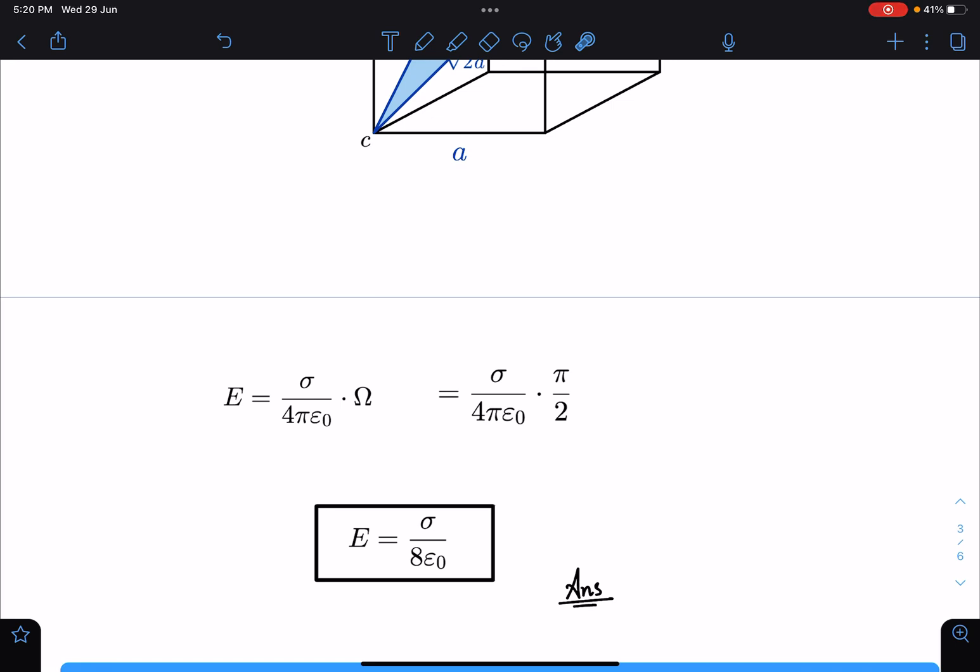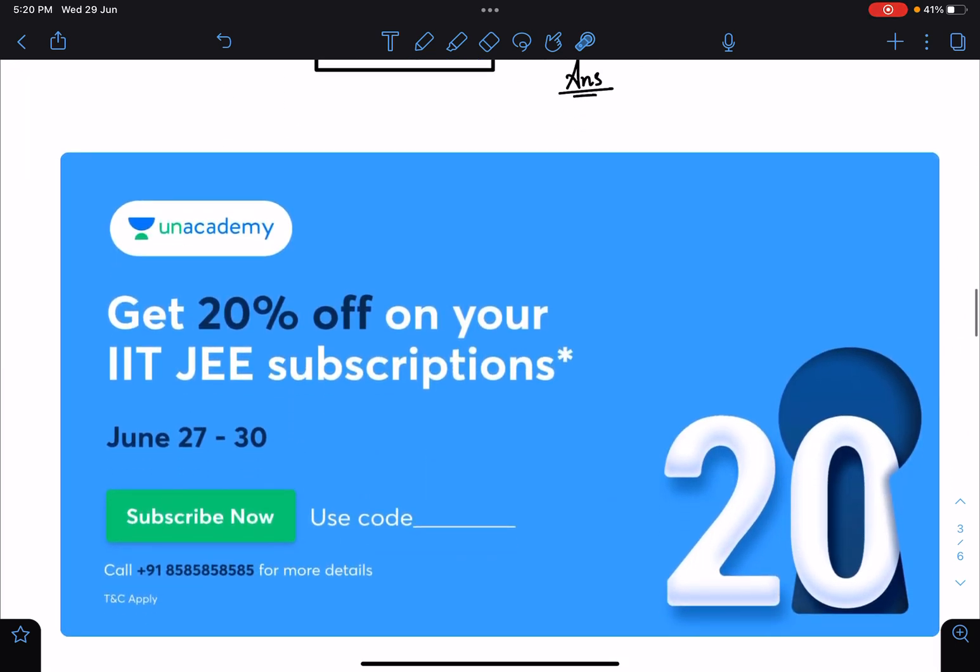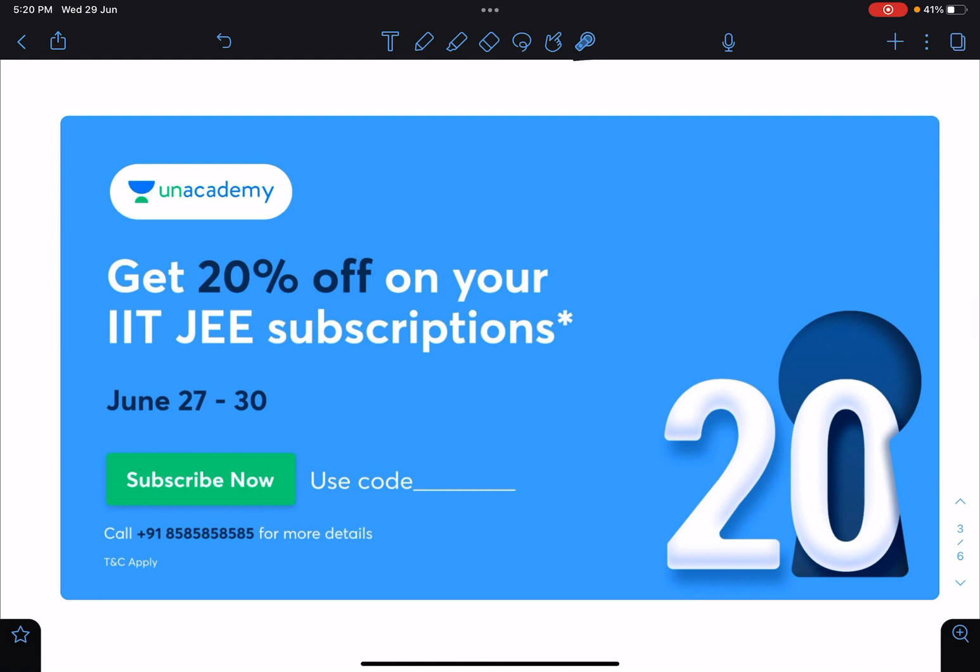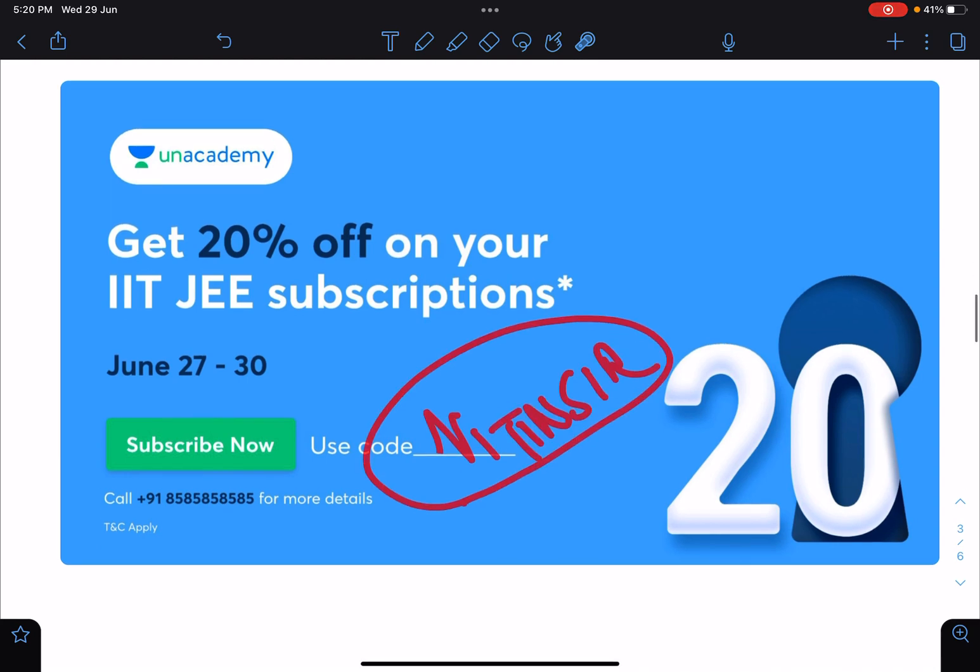Guys, if you want to connect with me on Unacademy, you can get 20% off on all your JEE subscriptions. This offer will be lasting till 30th June and you can use my code NITINSIR in order to connect with me on Unacademy.